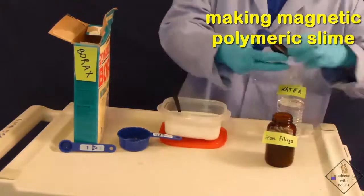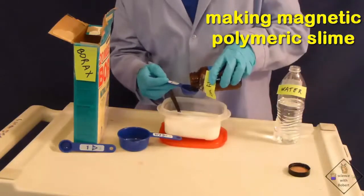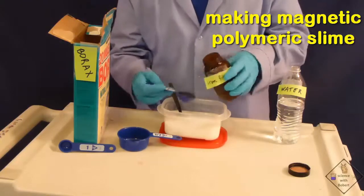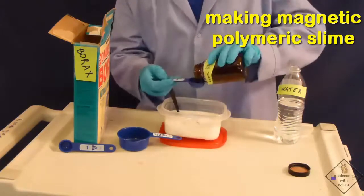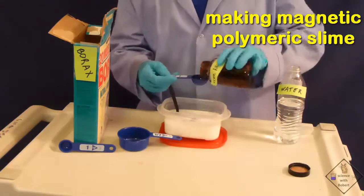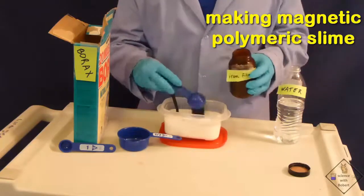He is now adding one tablespoon of iron filings for each ounce of glue. So he is adding a total of 8 tablespoons of iron filings. If you do not have iron filings, you can try something like staples.